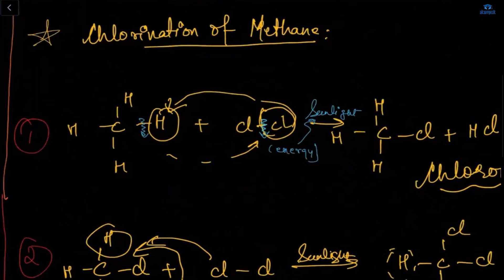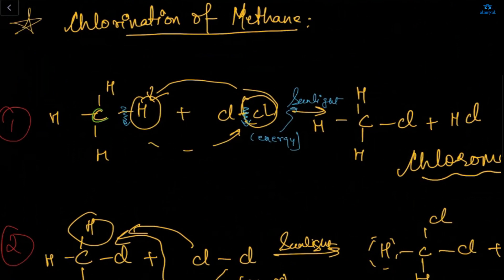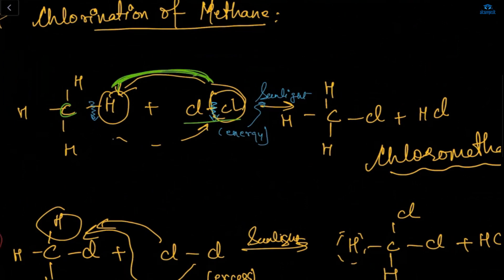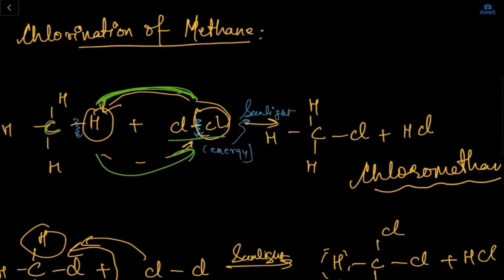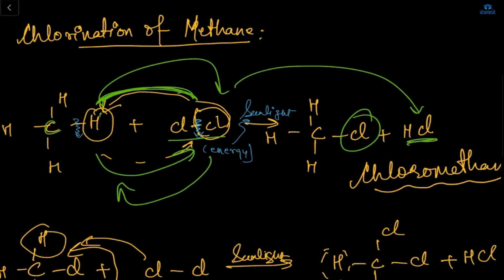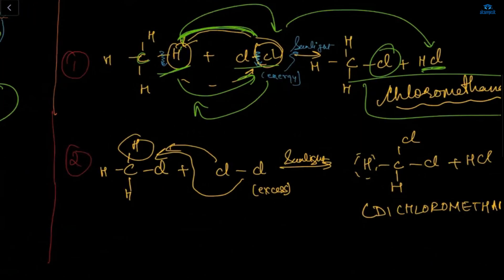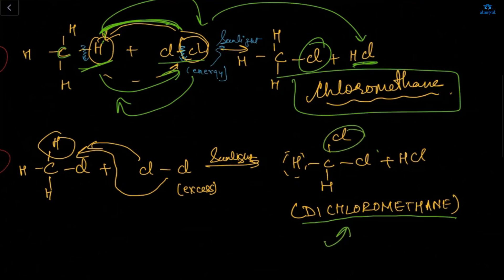This is the chlorination of methane, a subtopic of substitution reaction. Here carbon with four hydrogens plus chlorine, in the presence of sunlight, forms a product. The substitution is happening: chlorine comes in the place of hydrogen, and hydrogen combines with chlorine to form HCl — hydrochloric acid. This product is chloromethane. One more example: with two chlorines, we get dichloromethane — 'dichloro' means two chloro — and HCl.